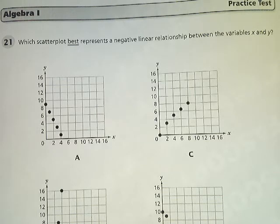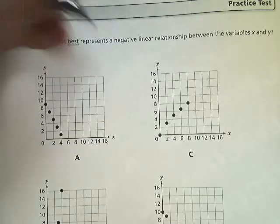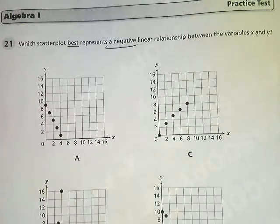Tennessee Intercourse Algebra 1 Practice Test. This is question number 21. The question asks, which scatterplot best represents a negative linear relationship between the variables x and y?